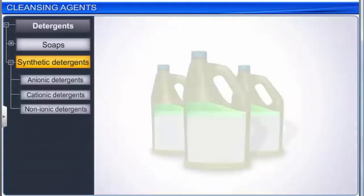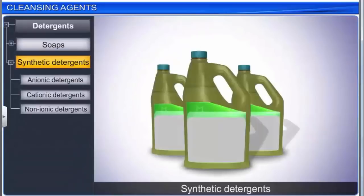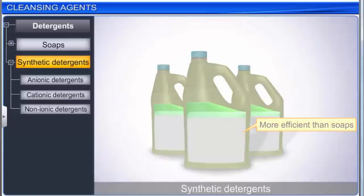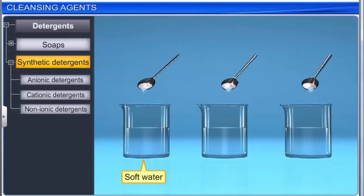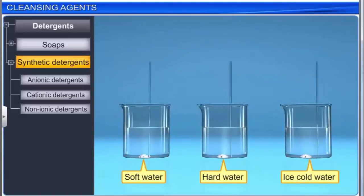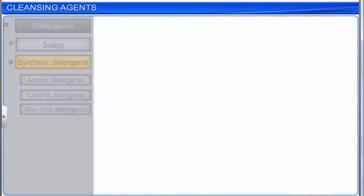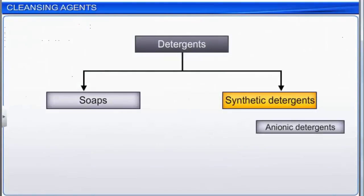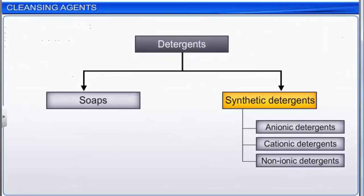Synthetic detergents are cleansing agents that have all the properties of soap but do not contain any soap. They are more efficient than soaps as they form lather in soft water, hard water, as well as in ice-cold water. Synthetic detergents are classified into three main categories: anionic detergents, cationic detergents, and non-ionic detergents.